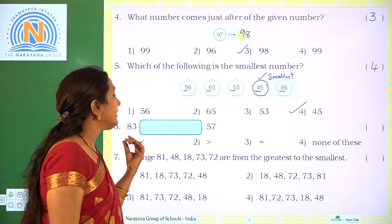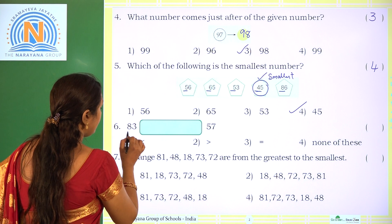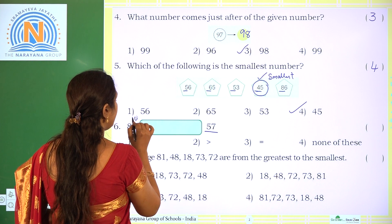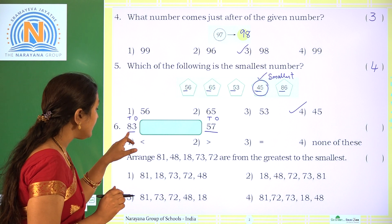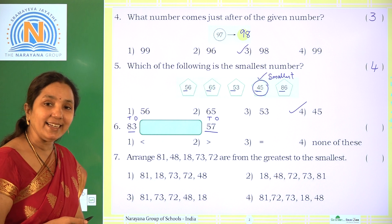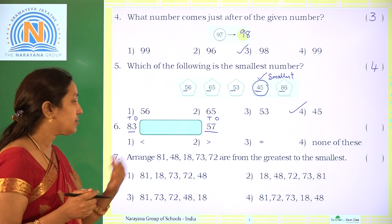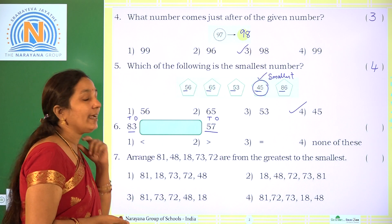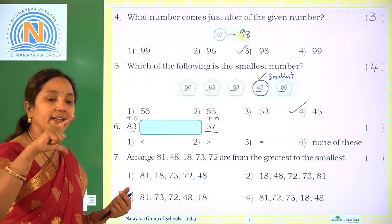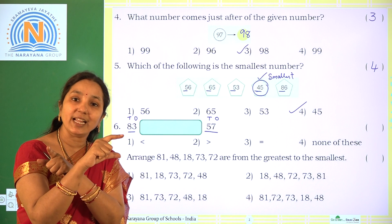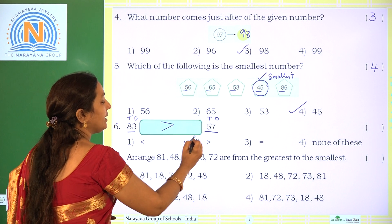Next: compare 83 and 57. Which is greater, which is smaller? Check the tens place: 83 has 8 in the tens place, 57 has 5. Since 8 is greater than 5, 83 is greater than 57. The open side of the symbol faces the greatest number, so we use the greater-than symbol. The correct option is option 2.